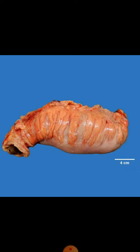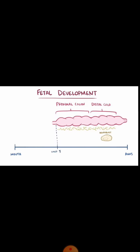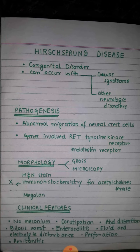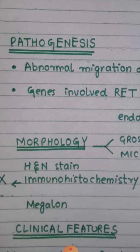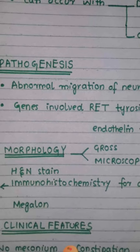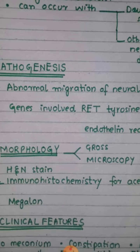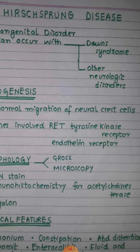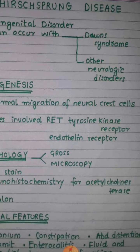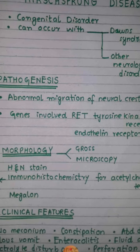Regarding morphology, this can be involved in a small part or even the entire colon. When we look at microscopy, we perform H&E stain and immunohistochemistry. On H&E stain, if we look at a normal colon we will see Auerbach's and mesenteric plexuses. If the plexus is absent, it means the person is suffering from Hirschsprung disease. With immunohistochemistry using acetylcholinesterase enzyme, if the plexus is present the result is positive and the person is normal; if absent, the person is suffering from Hirschsprung disease.